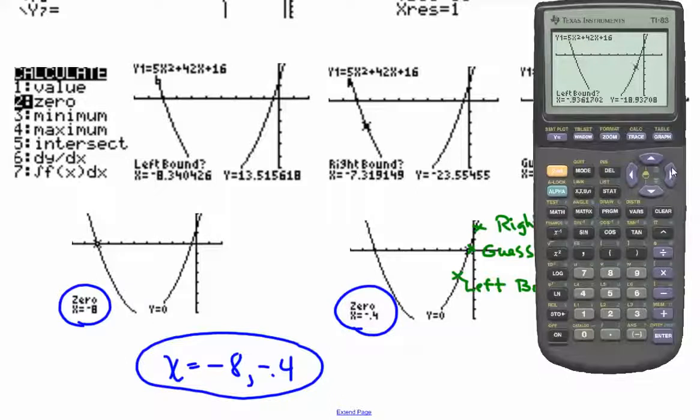So I'm going to stop just short of my intercept because I want to stay to the left and hit Enter. Now I'm going to mark the right side, so I have to go past it, above it over here, mark that, and then come back to guess about there, and we get our answer of negative 0.4. So we've got our two zeros.